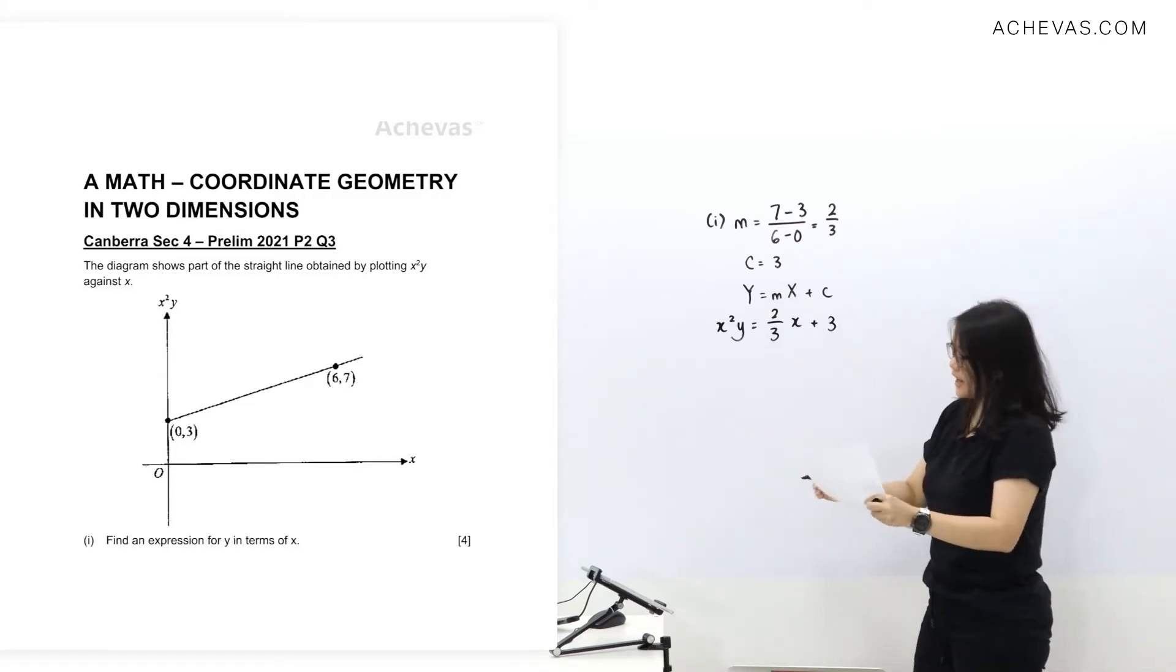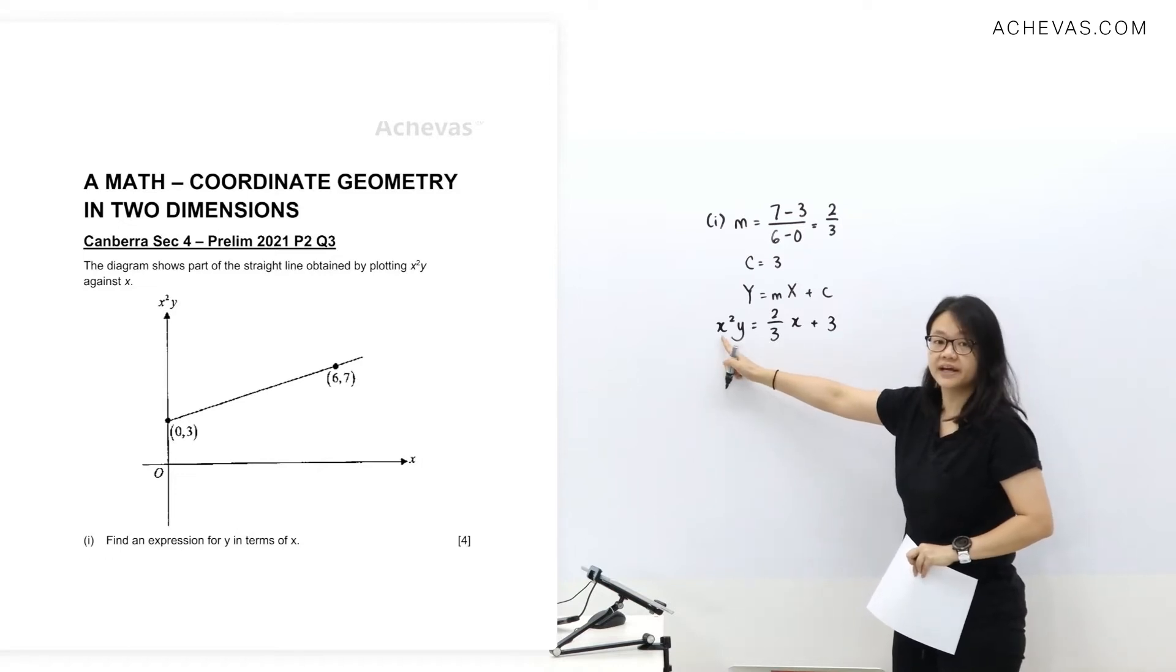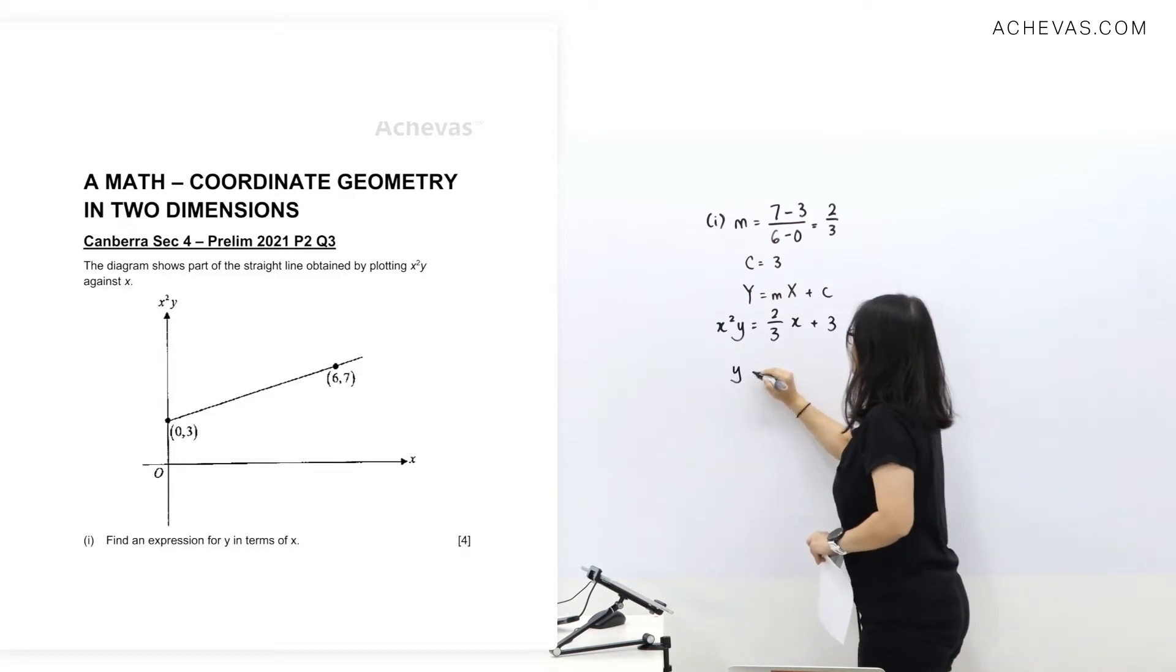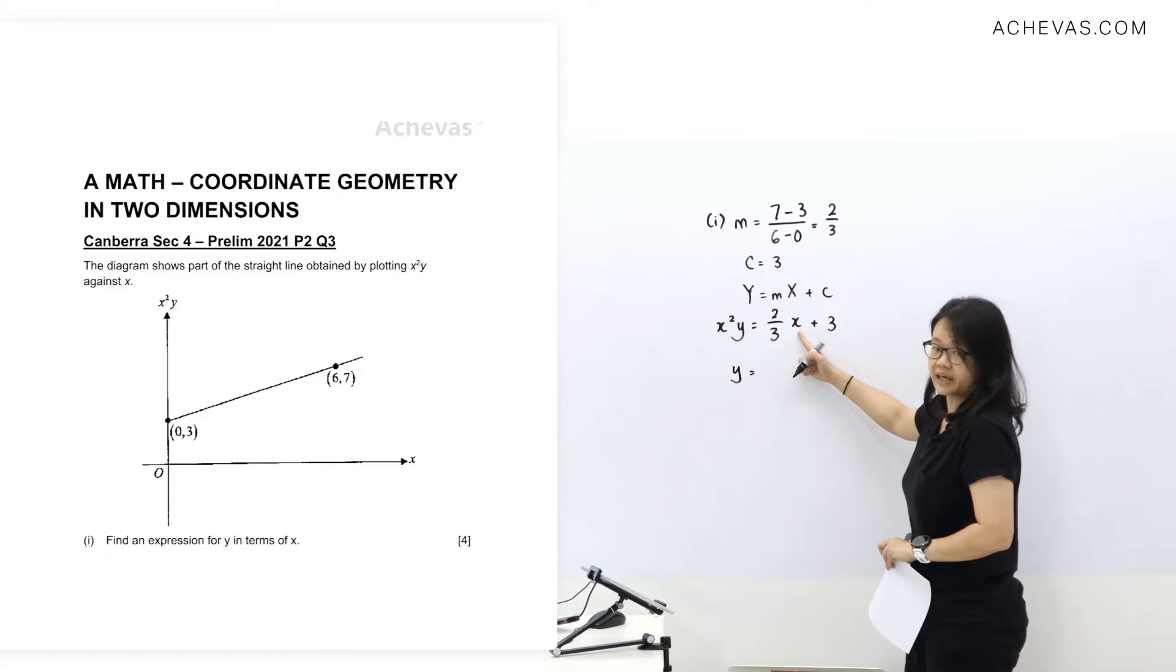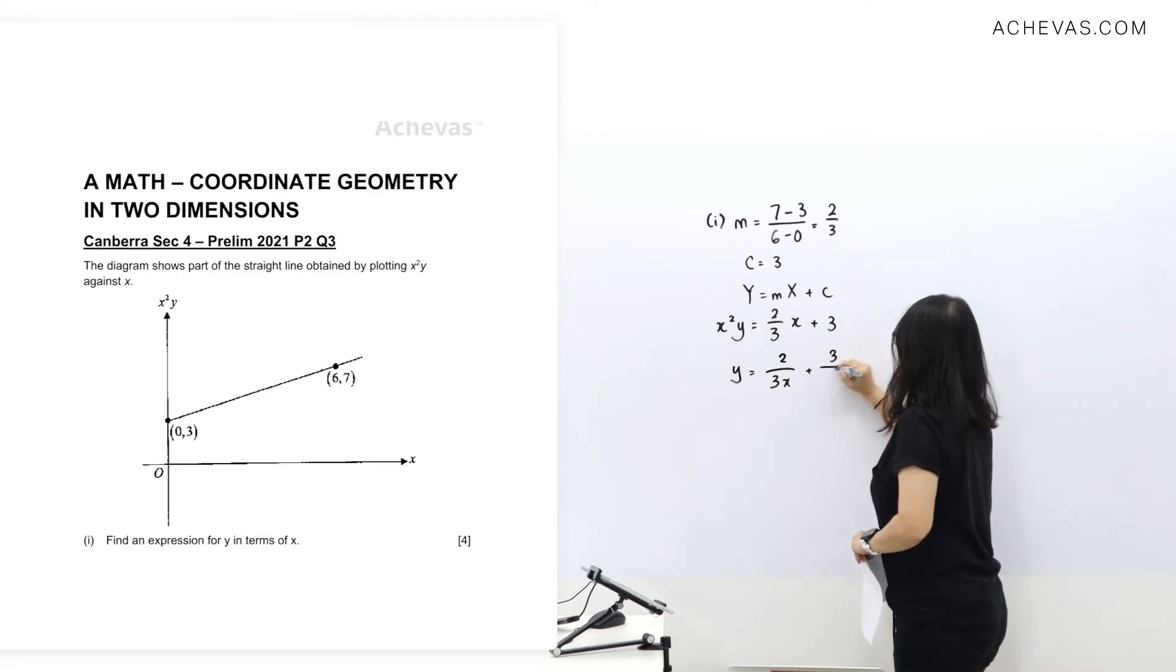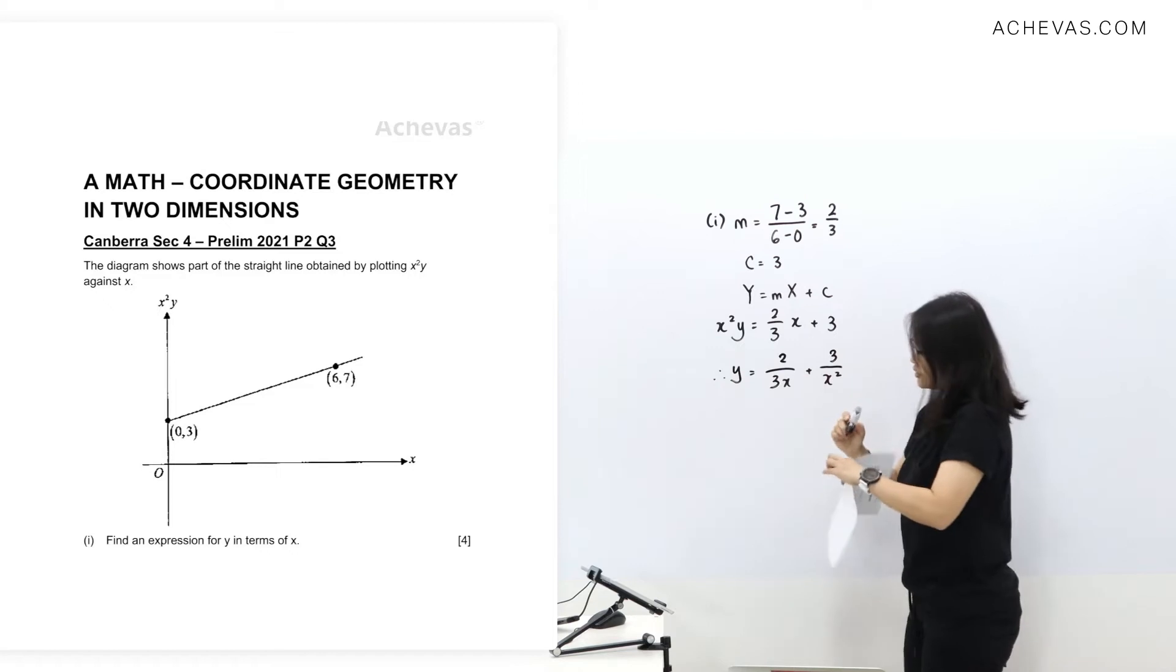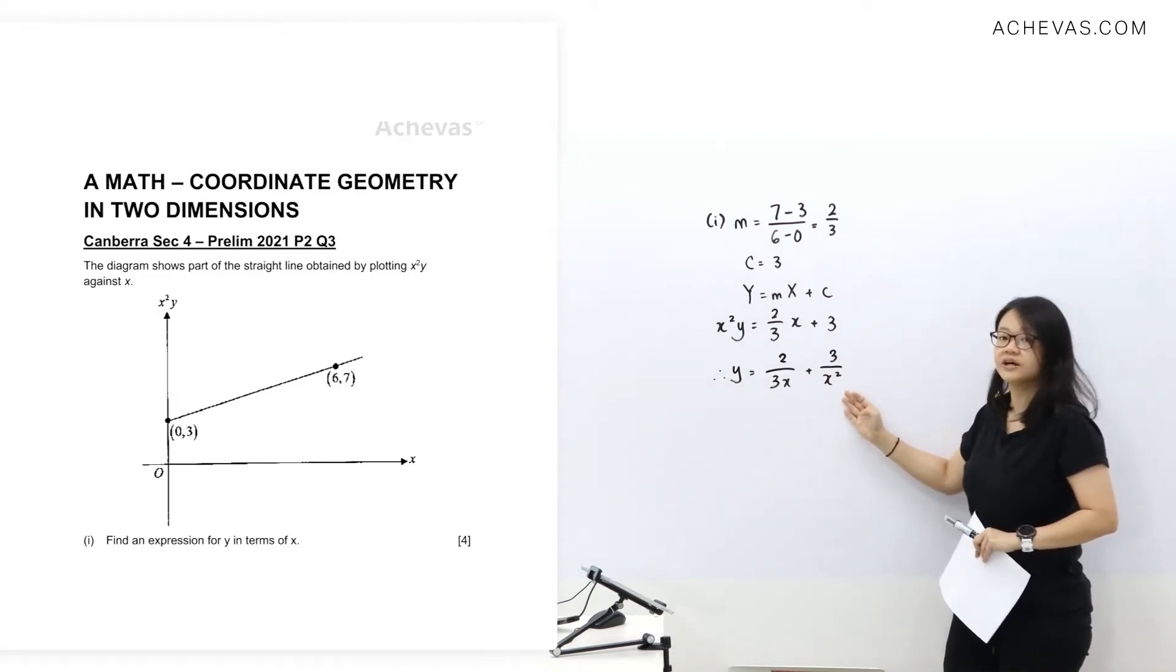Now, they want it in expression for y. So we have this x squared y. We're going to divide x squared from each of these terms. So this one divided by x squared, x divided by x squared, we'll get 2 over 3x. And this one divided by x squared. So our answer is y equals 2 over 3x plus 3 over x squared.